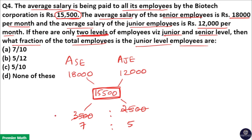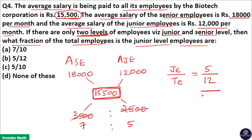So seven is to five is the ratio of senior employees to junior employees. The question asks for the fraction of total employees that are junior level, which is junior employees divided by total employees. Junior employees are five parts and total employees are seven plus five, which is 12 parts. So five by 12 is the answer — option B.